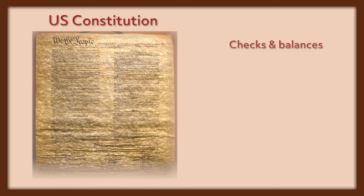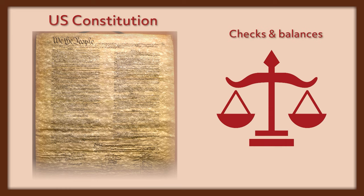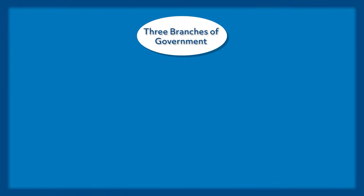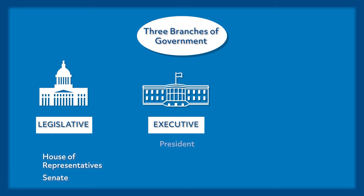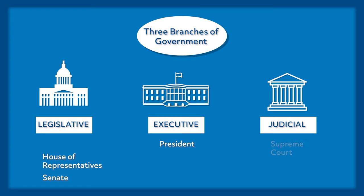The U.S. government was created with checks and balances built in. This prevents any one person or group of persons from exercising undue influence or control over the government and the country. We have three main branches: the legislative — the House of Representatives and the Senate — the executive, which is the president, and the judicial, which is the Supreme Court.